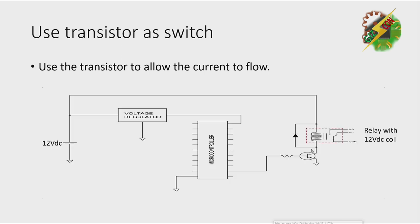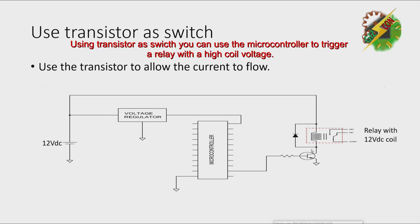Given the circuit, we have 12 volts DC and the relay with a 12-volt coil. We use the voltage regulator to generate 5 volts DC for our microcontroller.